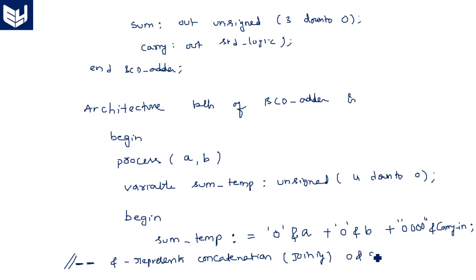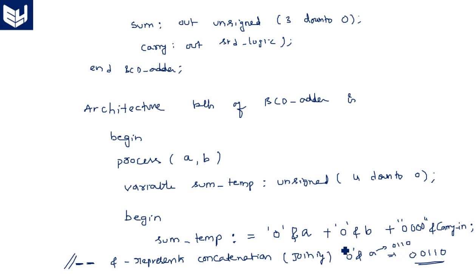For example, if a is '0110', then '0' & a gives '00110' — this is a 5-bit result. Adding a zero in front does not change the value of a; a is still 6. We are only adding the zero to increase the size. So all three operands — '0'&a, '0'&b, and '0000'&carry_in — become 5 bits, matching the 5-bit left-hand side with no problem.